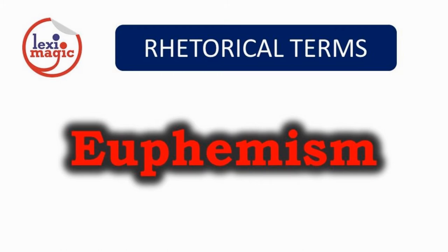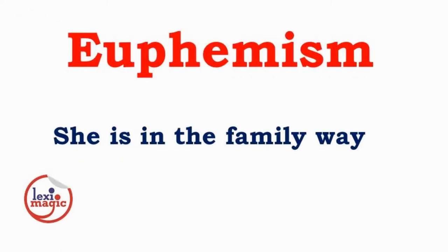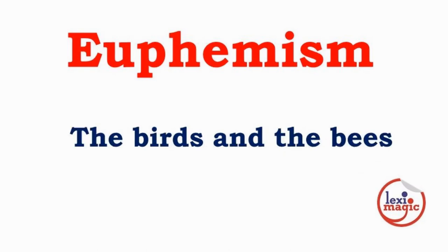Euphemism is the use of a milder or inoffensive word to replace an unpleasant term. Examples: 'Pardon my French' is a euphemism asking excuse for the use of profanity. 'She is in the family way' instead of saying she is pregnant. 'Passed away' instead of 'died.' 'The birds and the bees' instead of 'sex.'